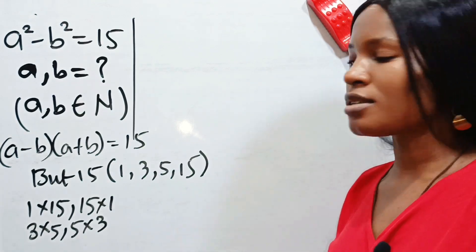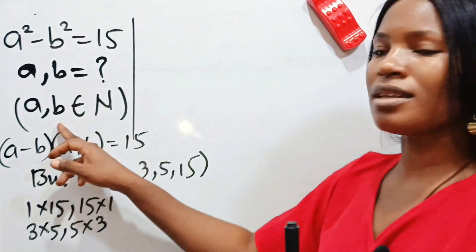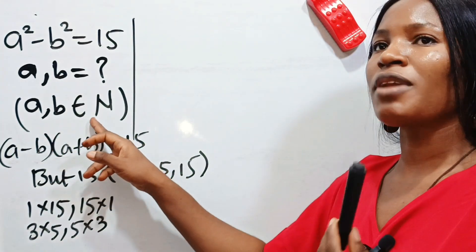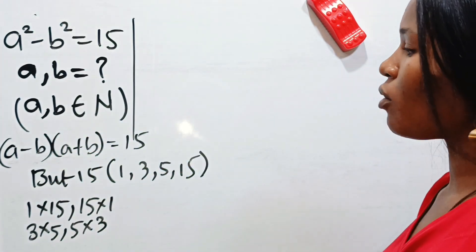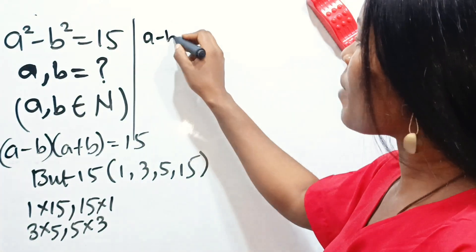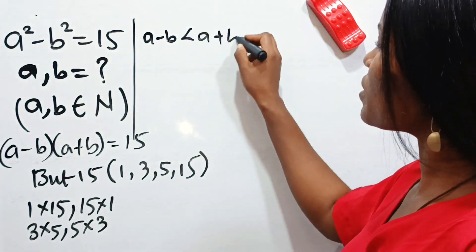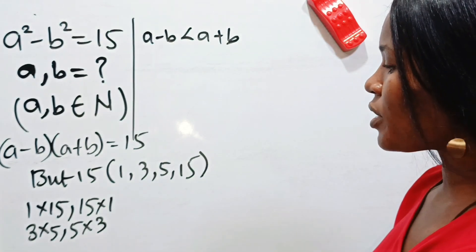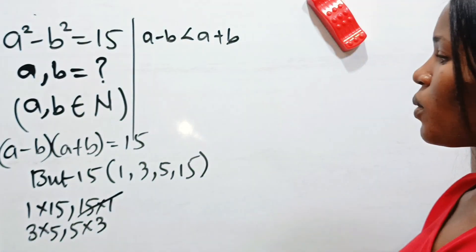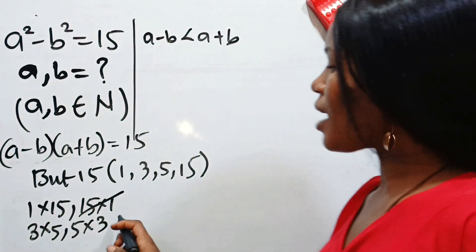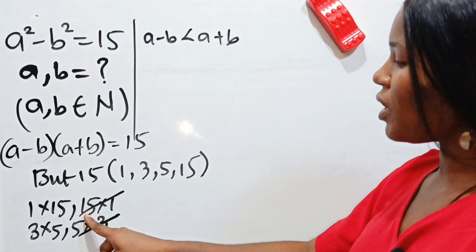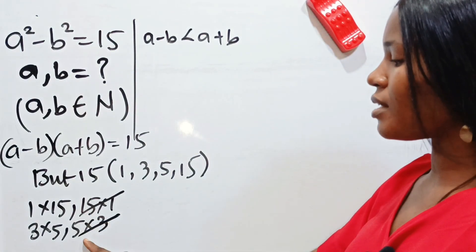Let me show you how to get this result. Remember there is another thing here. This instruction says that a and b must be natural numbers. And for them to be natural numbers, it simply means that a minus b must be less than a plus b. So with this condition now, this has already gone out. This 15 times 1 is out. And 5 times 3 is out. Because here, our a minus b is greater instead of less than. The same thing here.